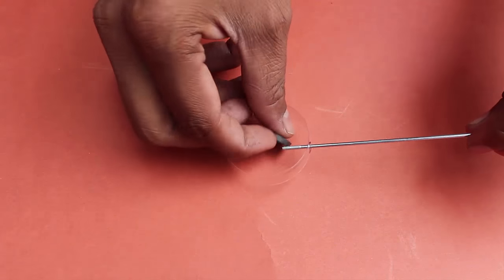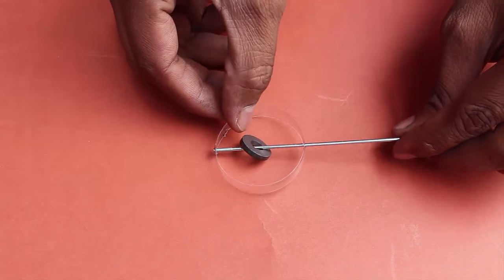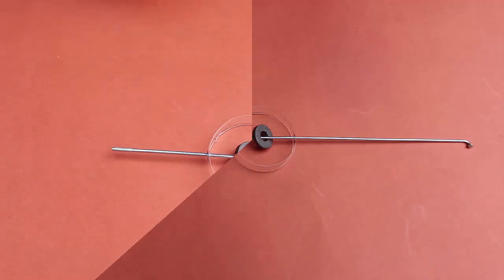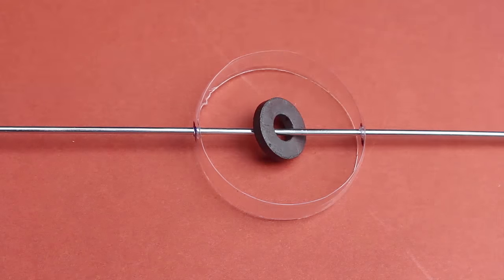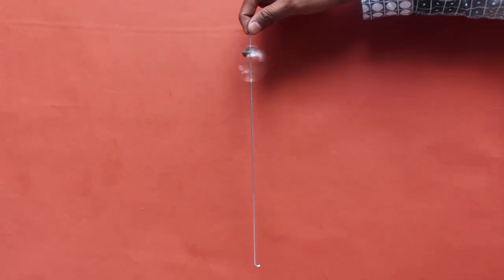For the assembly, place the spoke in one hole of the plastic hoop, then place a ring magnet. Finally, weave the spoke through the other hole of the plastic loop. The assembly is over. It's as simple as that.